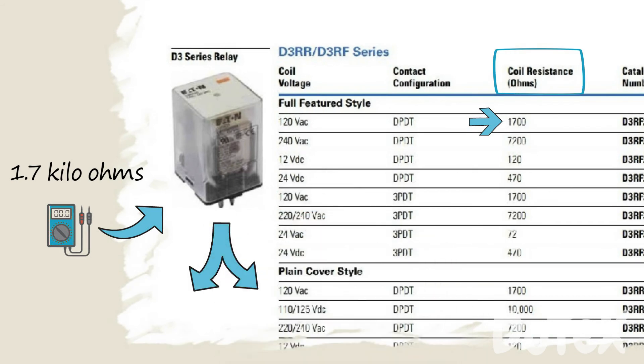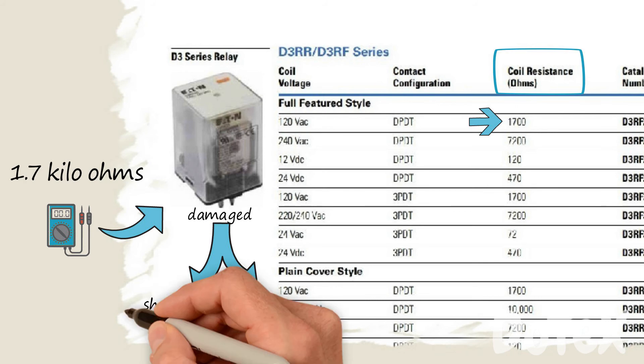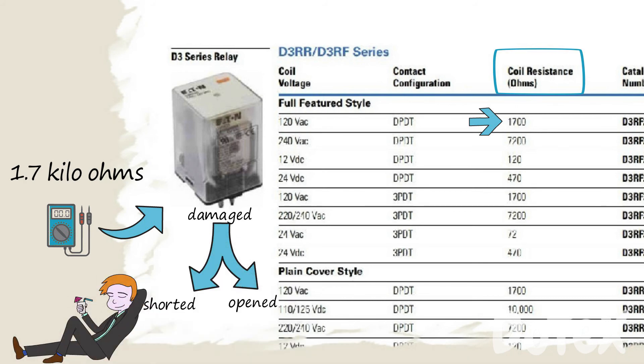If this coil was shorted, opened, or damaged, the ohm meter would show a different resistance. So we have a reference point right now. So let's test our relay coil terminals.